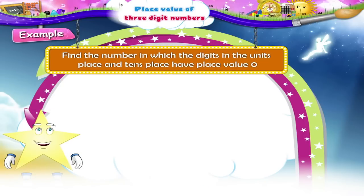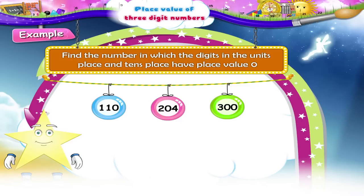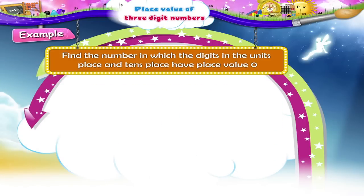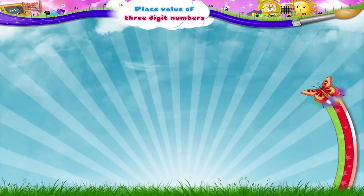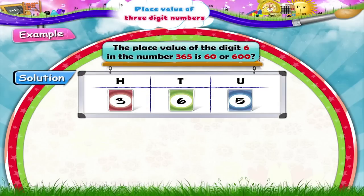This question is interesting. We have to find the number in which the digits in the units place and tens place have place value zero. Can you answer this? Yes — the correct answer is three hundred. Let us solve the next example: tick the correct answer out of the given choices. The place value of the digit six in the number three hundred and sixty-five is sixty or six hundred. The correct answer is sixty.